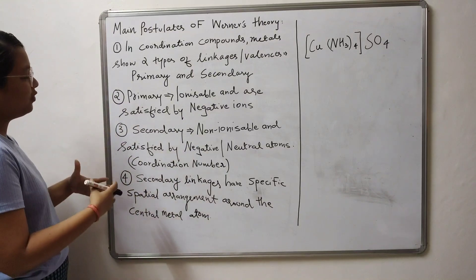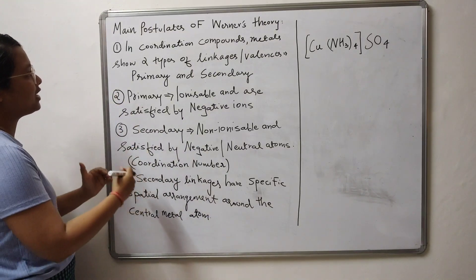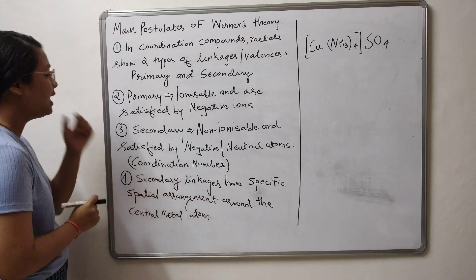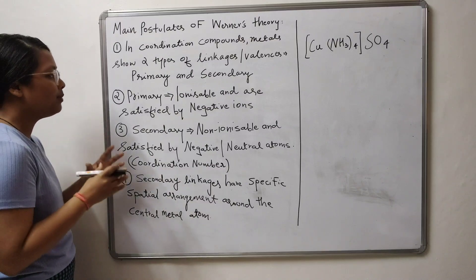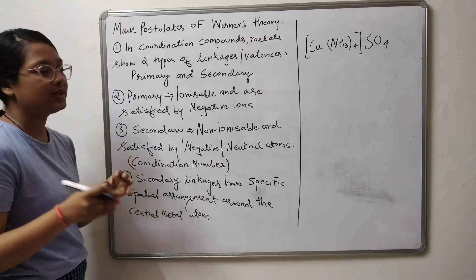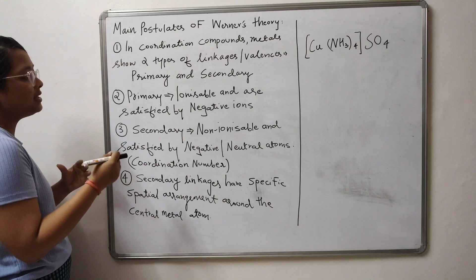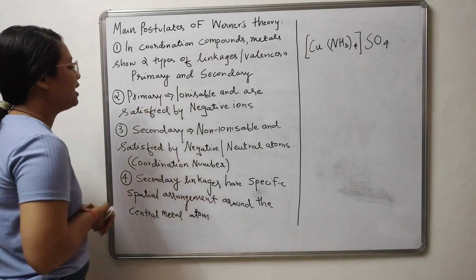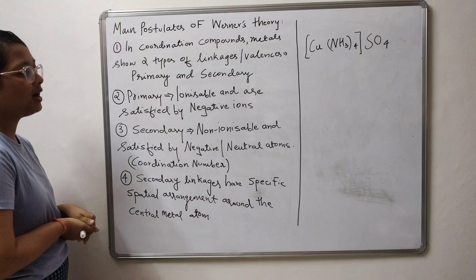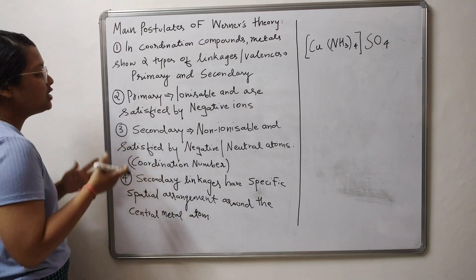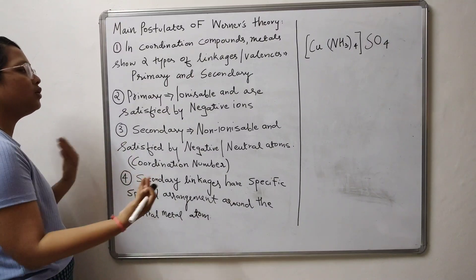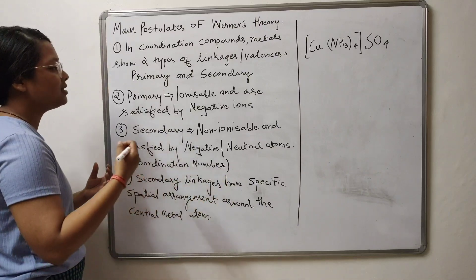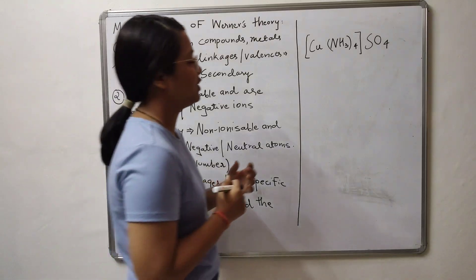The second, third, and fourth points are actually elaborating on the very first one. Let us look at primary valencies specifically. Primary valencies are the ones which are ionizable and are usually satisfied by negative ions. Let us try to understand what we mean by ionizable and satisfied by negative ions.